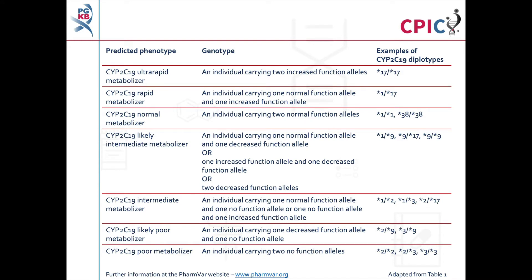There are currently almost 40 defined alleles of CYP2C19, known as star alleles. Star alleles are characterized by their rate of function relative to the *1 or *38 alleles, which are designated as normal function alleles. Diplotypes of CYP2C19 star alleles can be assigned to a metabolizer phenotype as shown in this table and in table 1 of the guideline. Note that as more evidence becomes available, new star alleles can be added and the functional definition of some star alleles may change. An important caveat is that any alleles not detected in the assay are designated as *1.